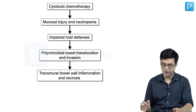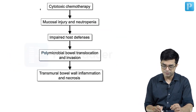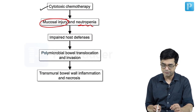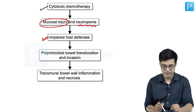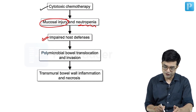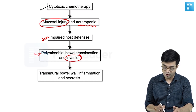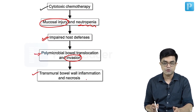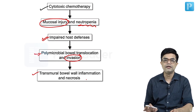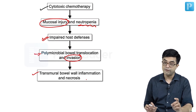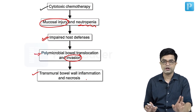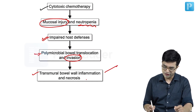Look at this flow chart. Whenever cytotoxic chemotherapy is given to the patient, there will be mucosal injury and neutropenia. The combination of the two will lead to impairment of host defences. This will cause polymicrobial bowel translocation and invasion into the gut, which will lead to transmural bowel inflammation and necrosis, ultimately resulting in bowel perforation, bowel necrosis, and septic shock. So three sequelae happen because of this — please remember all of these.